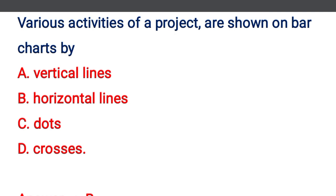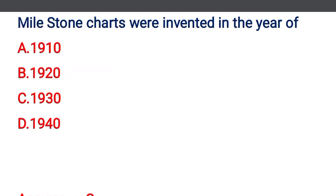Next question: various activities of the project are shown on the bar chart by — option A: vertical lines, option B: horizontal lines, option C: dots, option D: crosses. The correct answer is option B: horizontal lines.